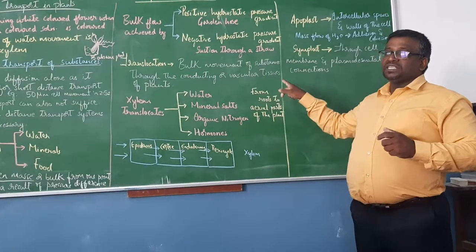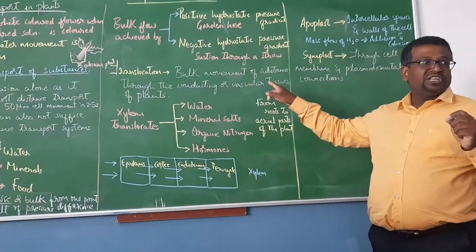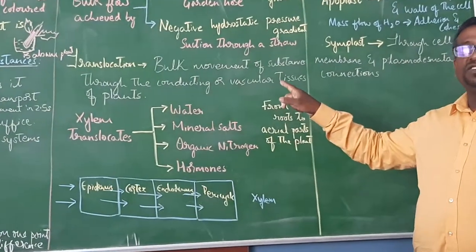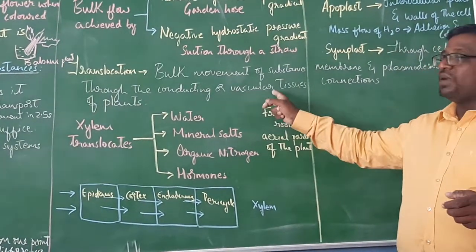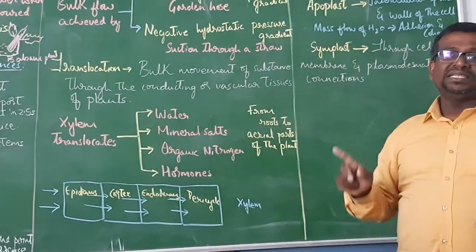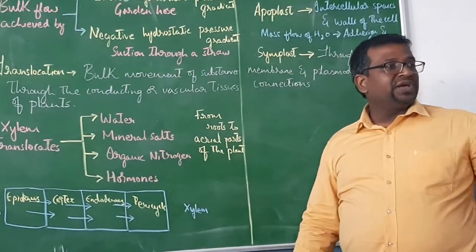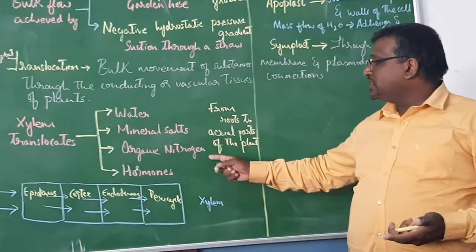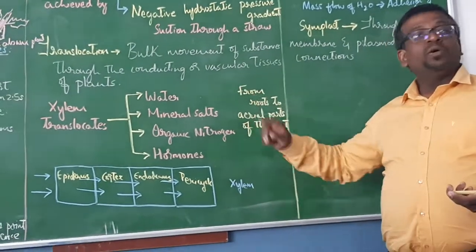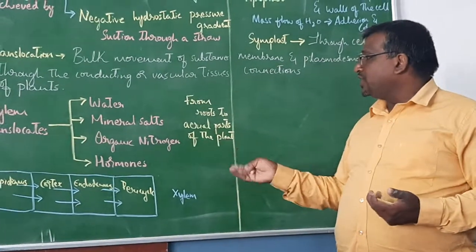The bulk movement of substances - what is translocation? The definition is bulk movement of substances, it can be food, minerals, water through the conducting or vascular tissues of plants we call it as translocation. Translocation of water, translocation of minerals, translocation of organic solutes, hormones - all these terms we use translocation.